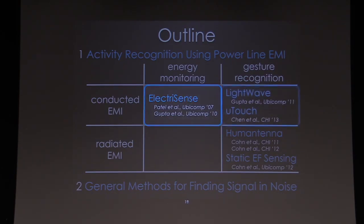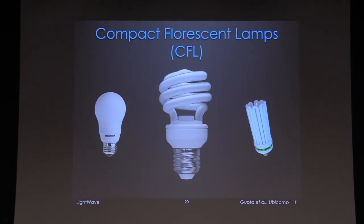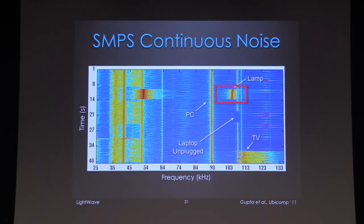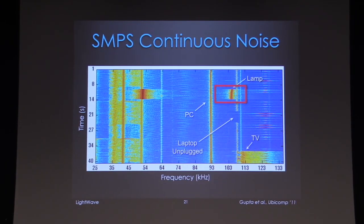You can also use the same conducted EMI for gesture recognition. Let's look at another one of these noise sources. These are compact fluorescent light bulbs — that's a CFL lamp being turned on for a few seconds.